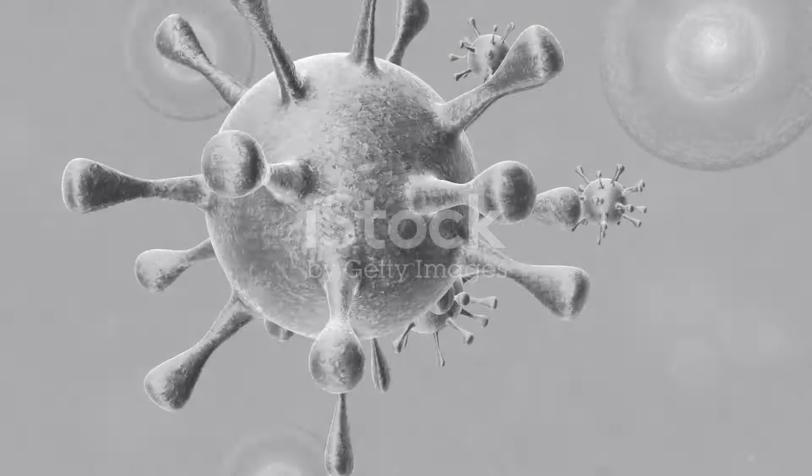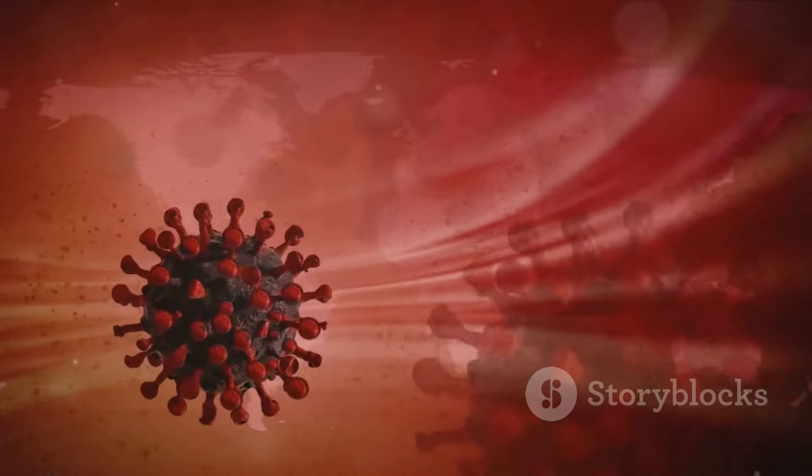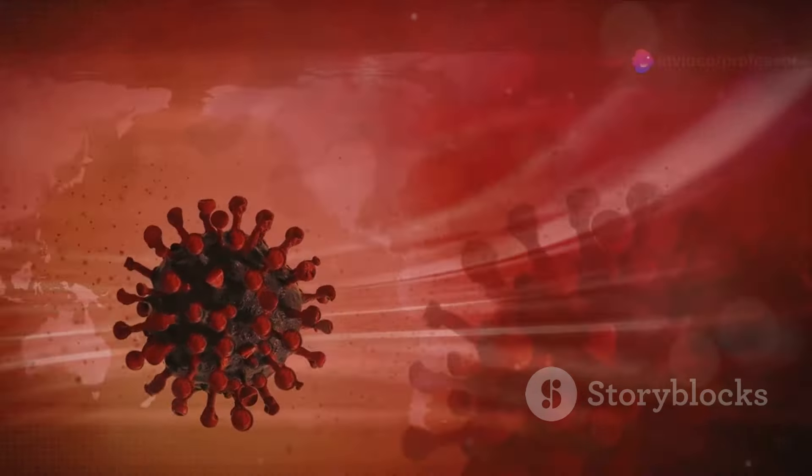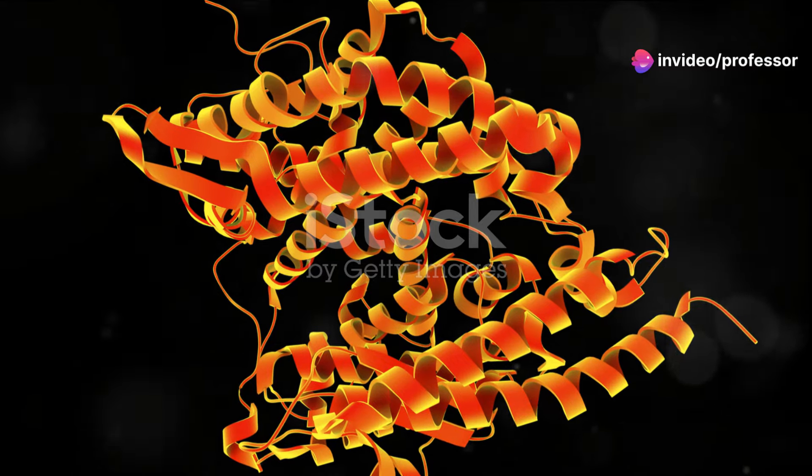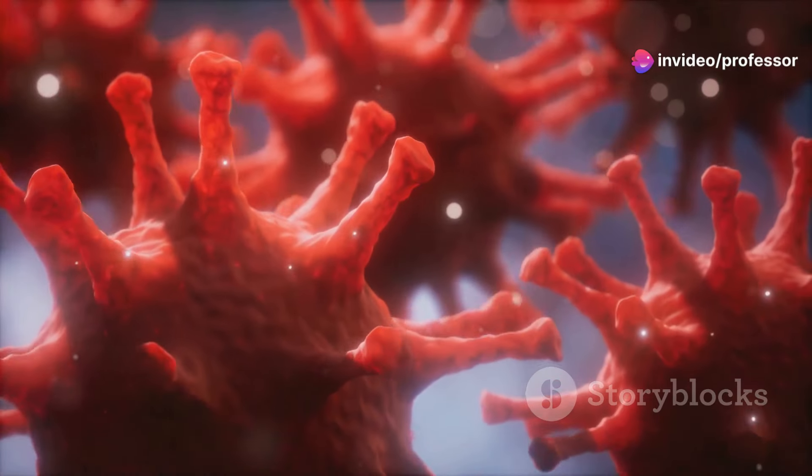The coronavirus starts its journey by finding a gateway into your cells. Imagine the virus as a sneaky intruder, using its spike proteins like keys designed to fit perfectly into locks on our cell walls. These locks are known as ACE2 receptors.